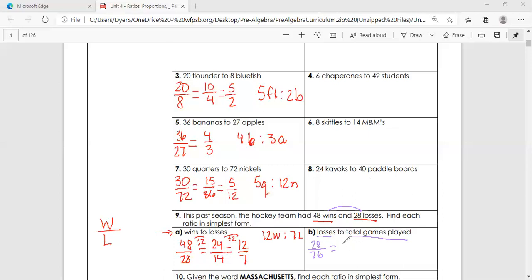So then we need to figure out what goes into both of those. So let's start with dividing by two. So we'll get 14 to 38. Then we divide by two again. And we get seven to 19. So that brings us to our simplest form because if you notice, you probably recognize seven and 19 are both prime. So we have seven losses to 19 games played.